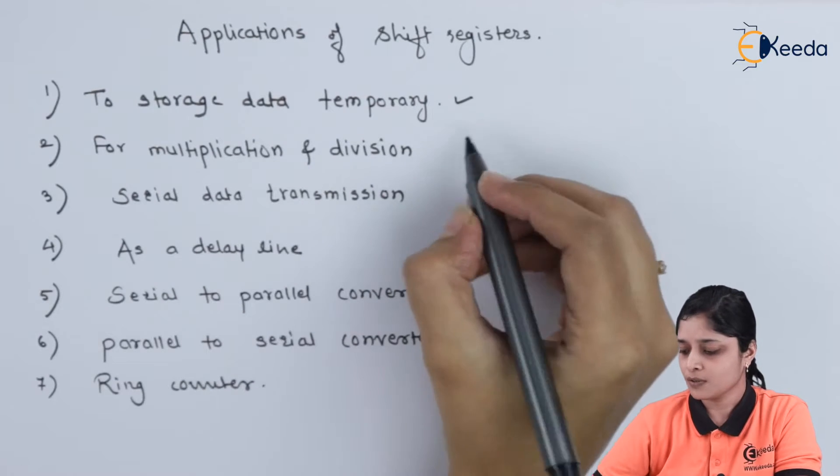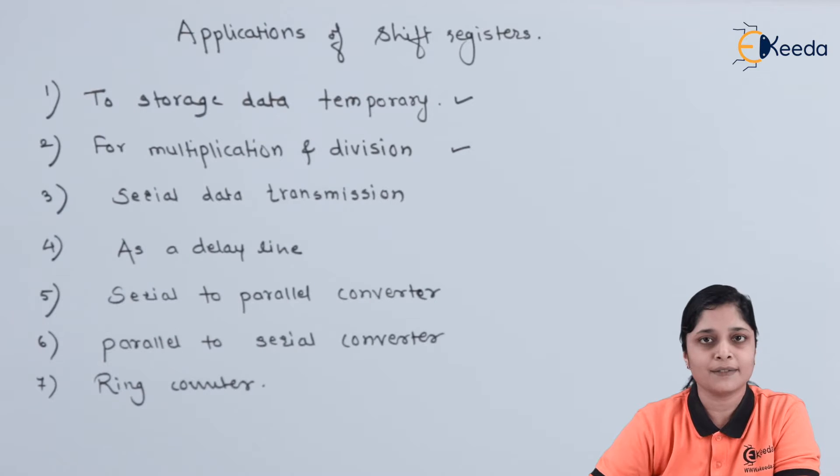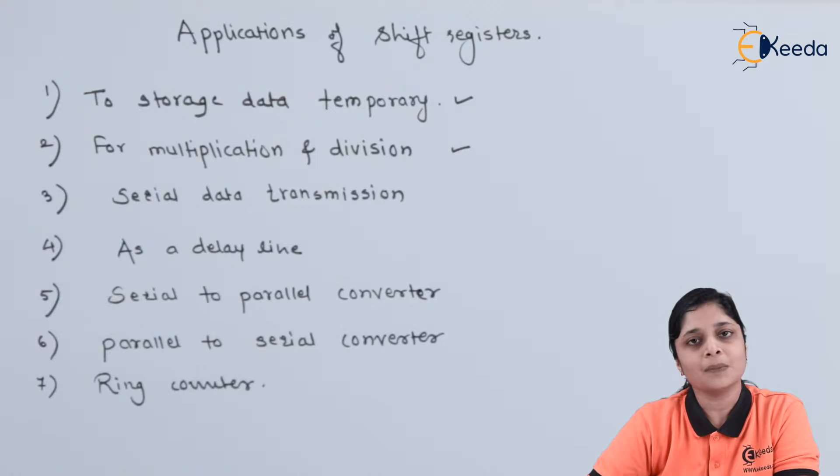Next application is for multiplication and division. For binary multiplication and for binary division, we require a shifting of bits. That's why shift registers are used for binary multiplication and binary division, hence this becomes the application for the shift registers.